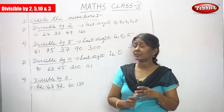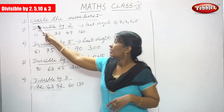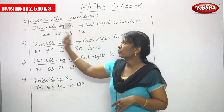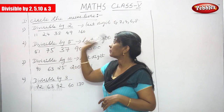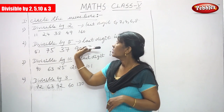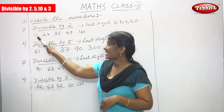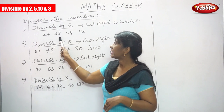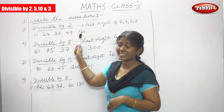Now we are doing the exercise. Circle the numbers. First question: divisible by 2. The numbers are 11, 24, 38, 49, 160.